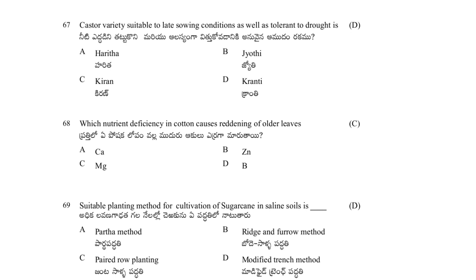Which castor variety is suitable for late sowing conditions and is tolerant to drought? Options: Harita, Jyoti, Kiran, Kranti. The answer is Kranti. Which nutrient deficiency in cotton causes reddening of older leaves? Options: calcium, zinc, magnesium, boron. The answer is magnesium.